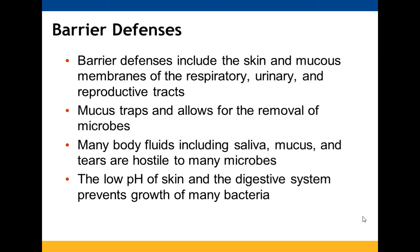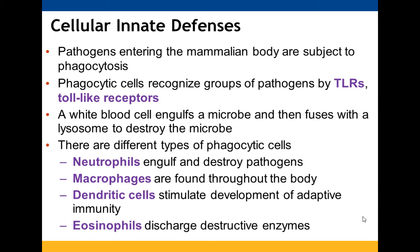Barrier defenses: skin is one of the best protections an animal has. Mucous membranes also play a role — mucus traps and removes microbes. Many body fluids are uninhabitable for microbes, and the low pH of skin and the digestive system helps prevent bacterial growth.